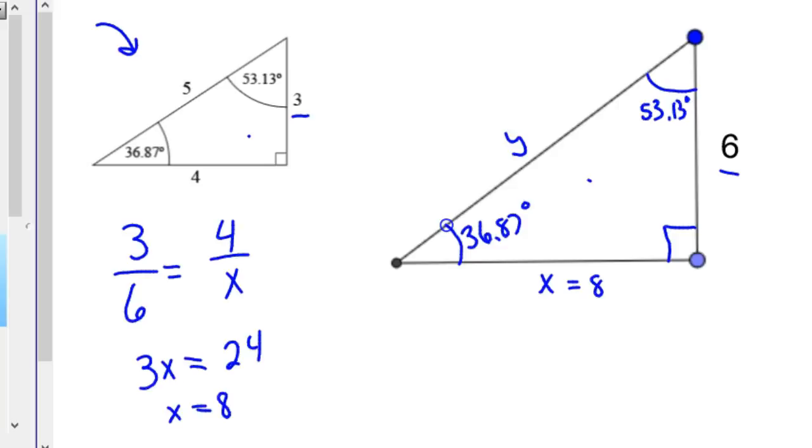And then also, same for Y. 3 over 6 equals 5 over Y. And again, if you cross multiply, 3Y equals 30, and so Y is equal to 10.